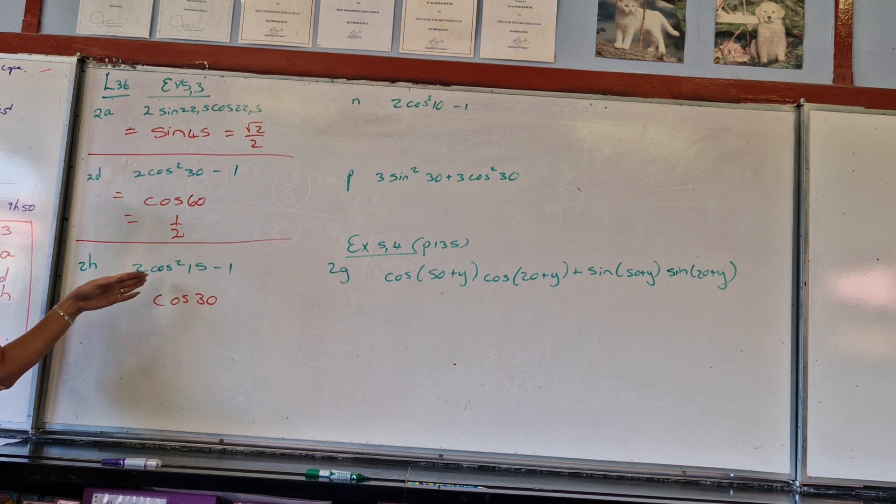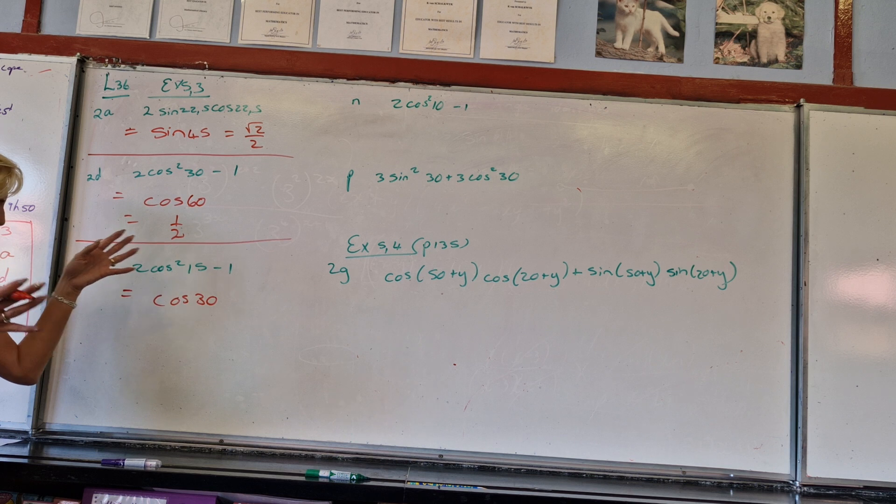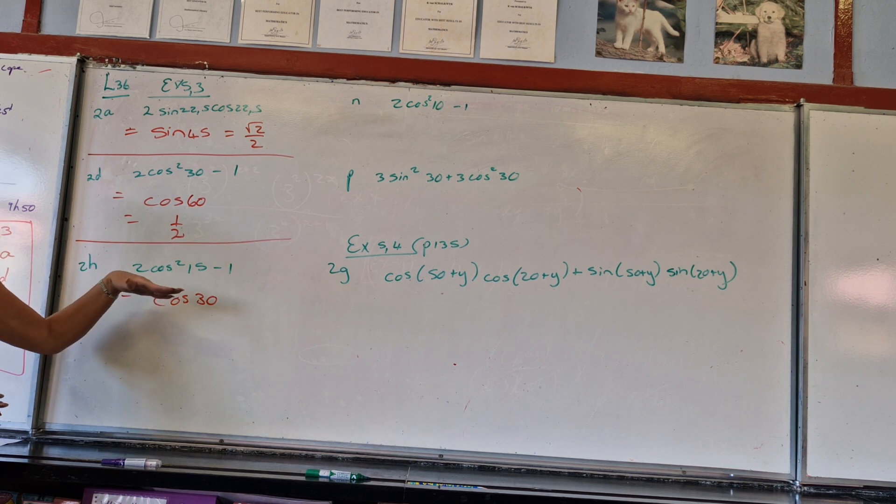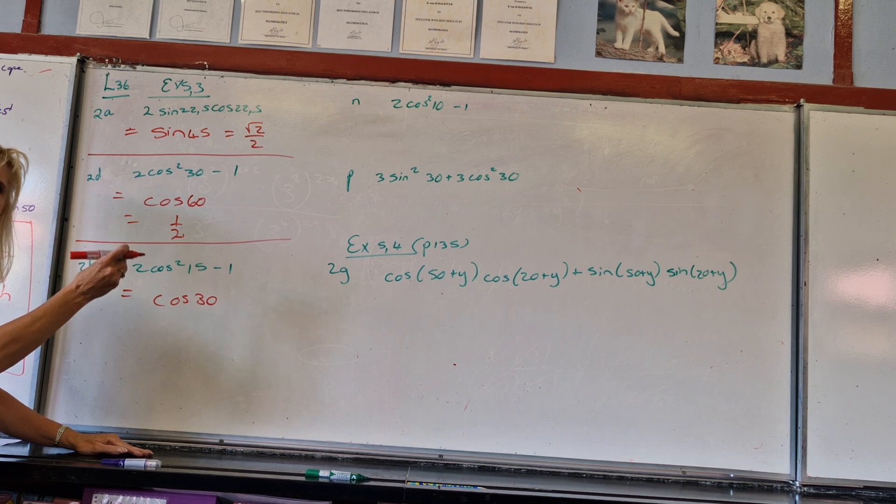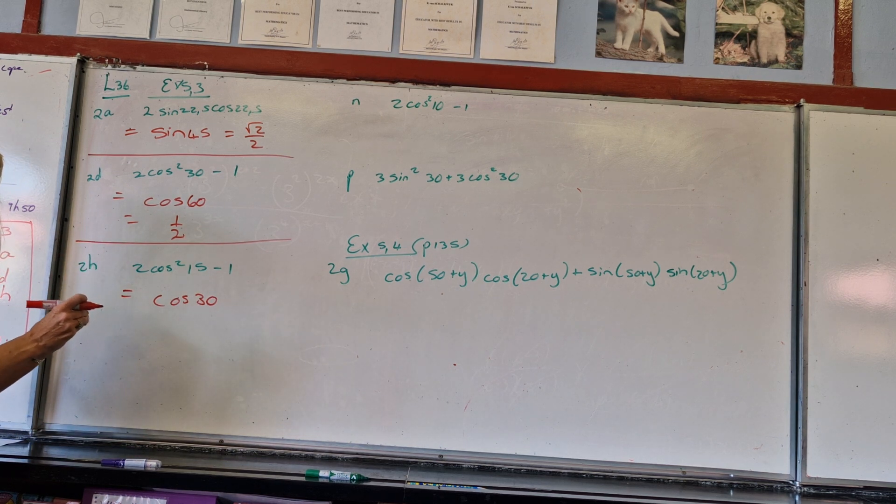So we're going to have again cos of the double angle which is 30. So you're going to want to ask me, man, what happened to the 2 and the 1 and where is the cos now? Do you see that this is identities?